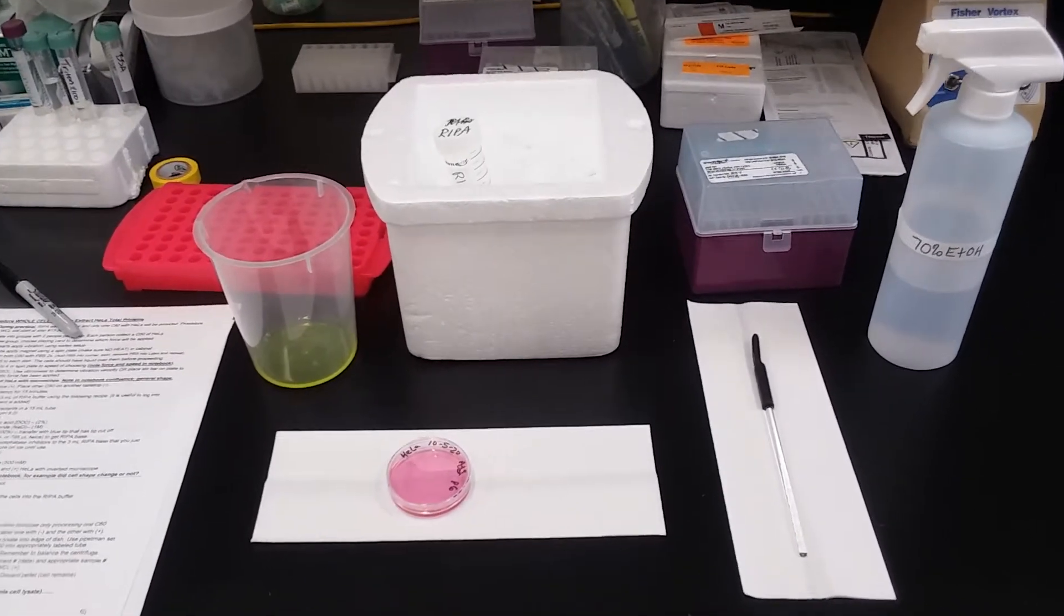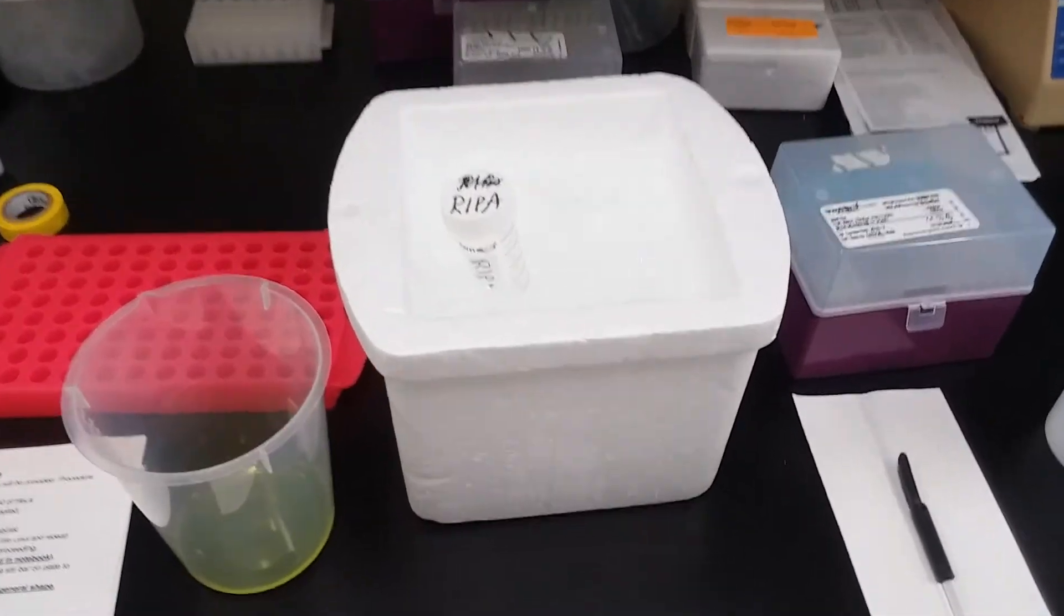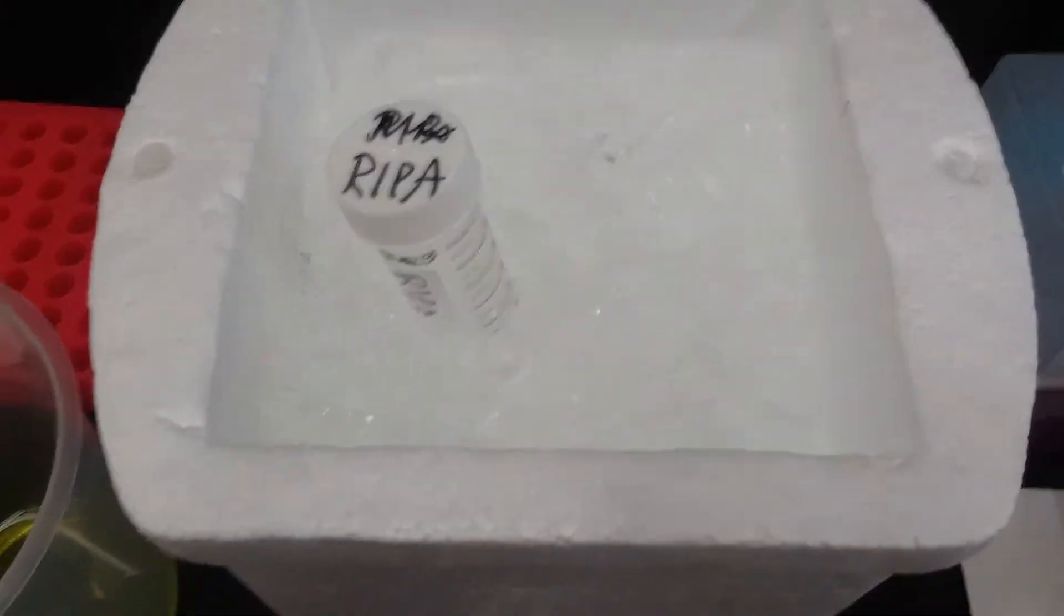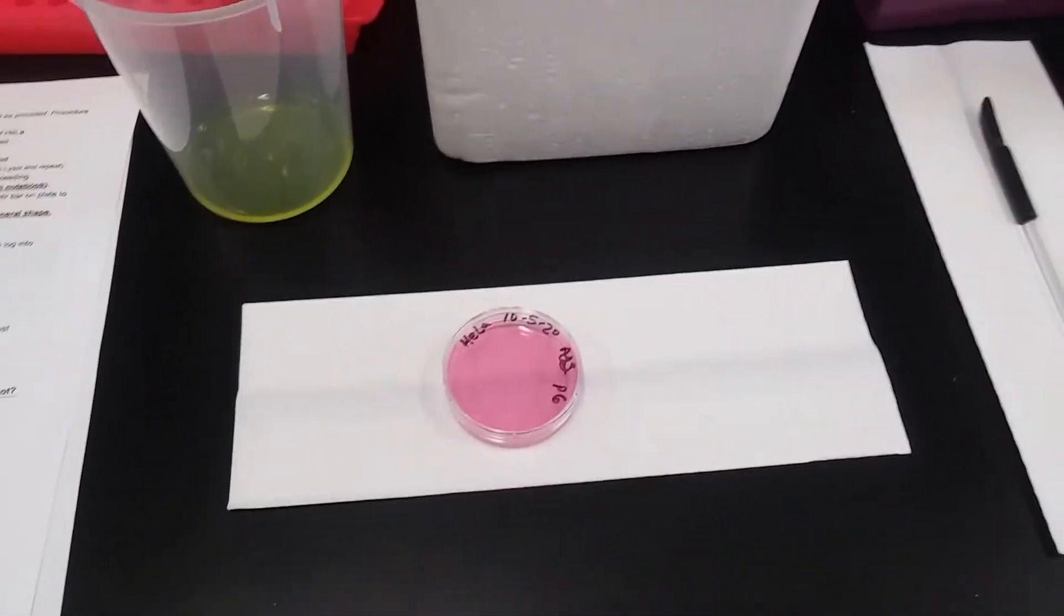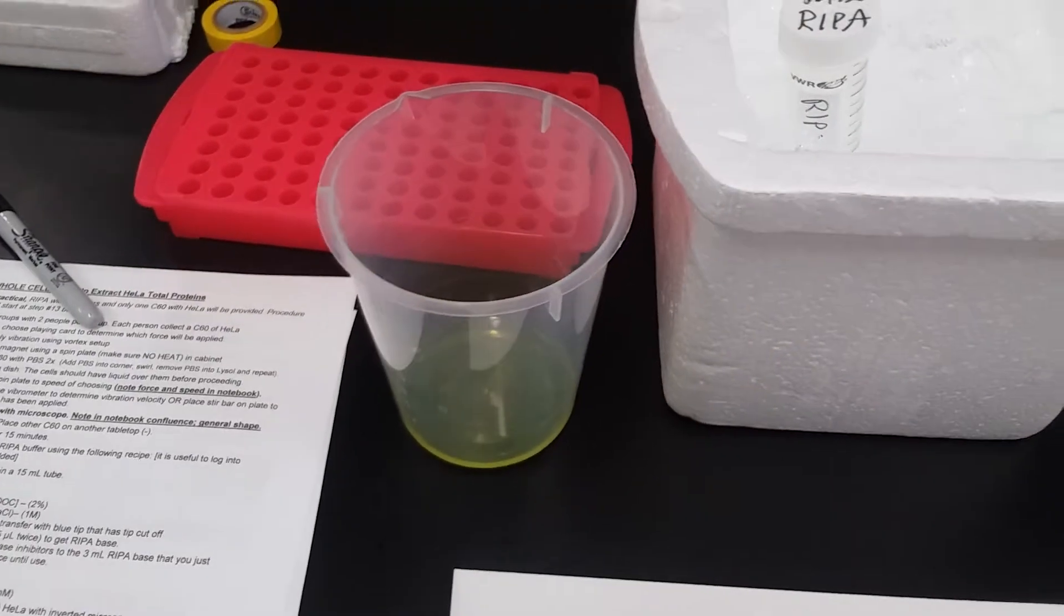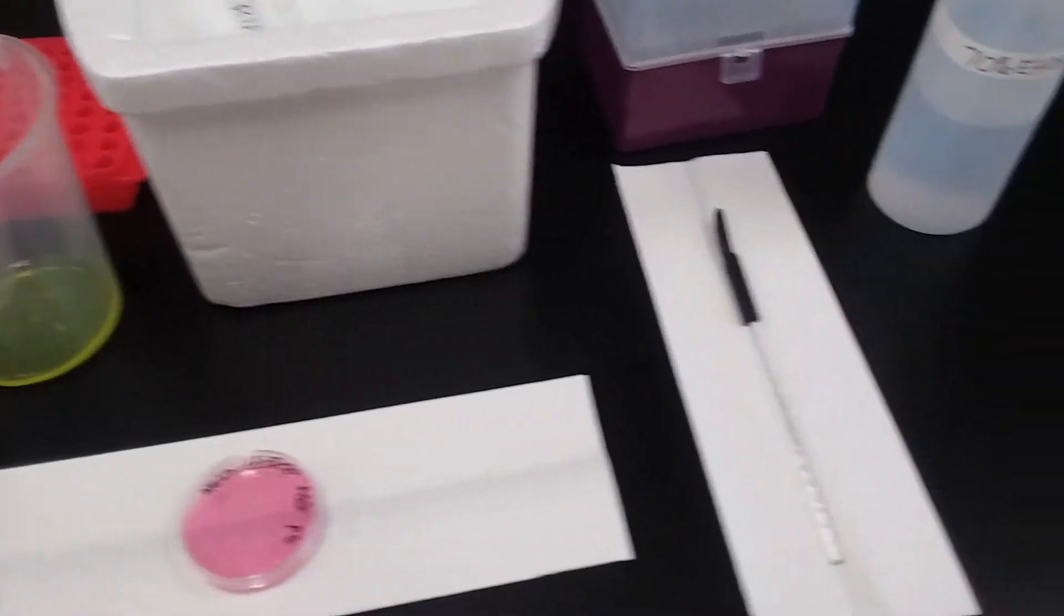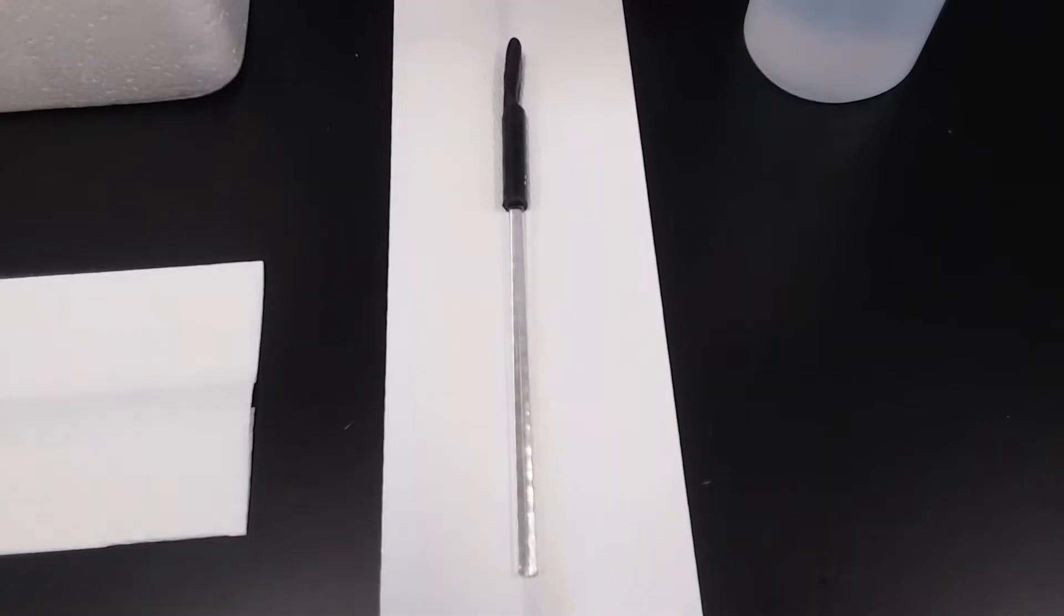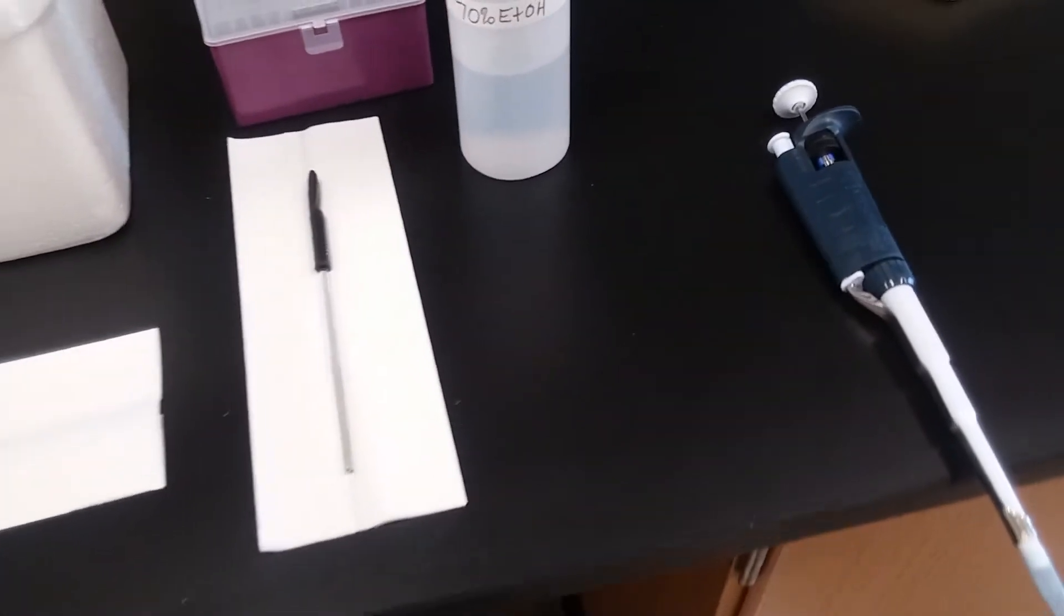So I've cleaned up my area, and now I'm ready for my actual lysis. I have my super cold RIPA, my C60 of HeLa, a beaker with Lysol in it. I also have something called a rubber policeman, and I have my pipette man set with my tip, and I'm ready for lysis.